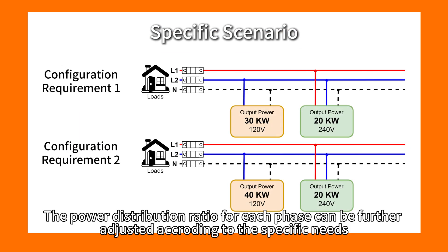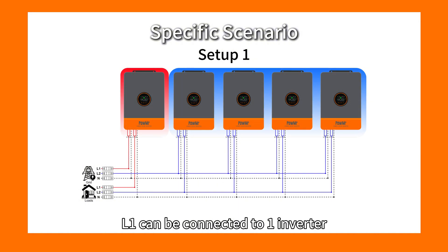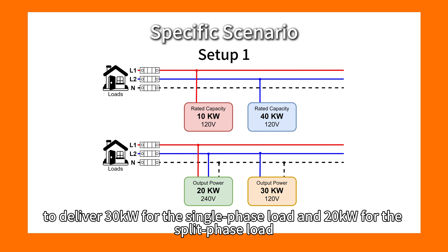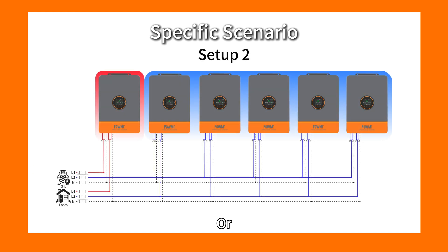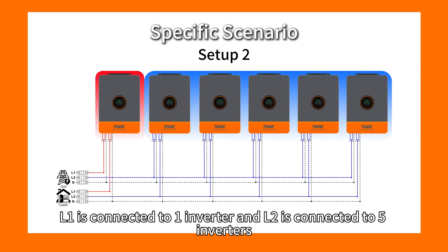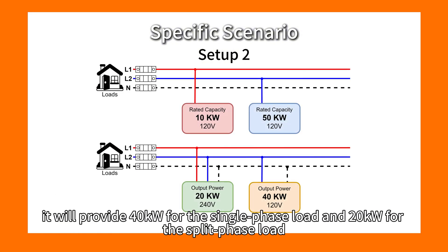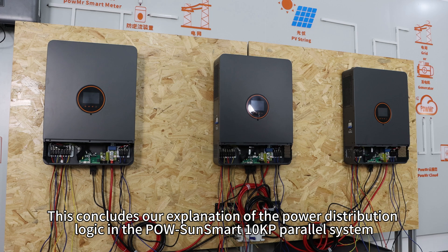The power distribution ratio for each phase can be further adjusted according to specific needs. For instance, L1 connected to one inverter and L2 to four inverters delivers 30kW for the single-phase load and 20kW for the split-phase load. Or with L1 on one inverter and L2 on five inverters, it provides 40kW for the single-phase load and 20kW for the split-phase load.